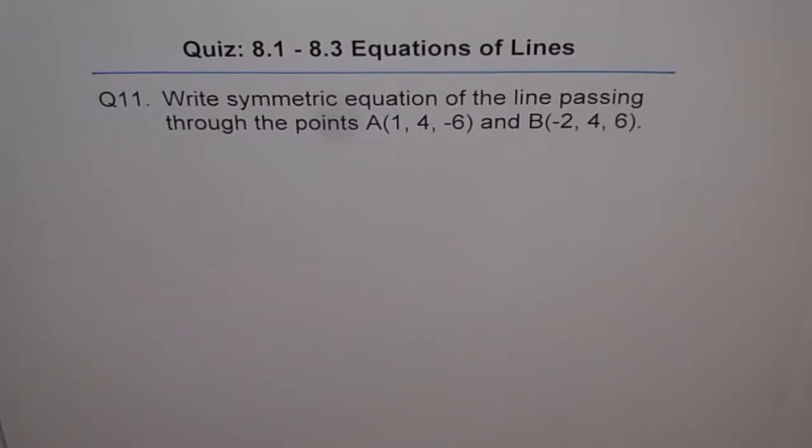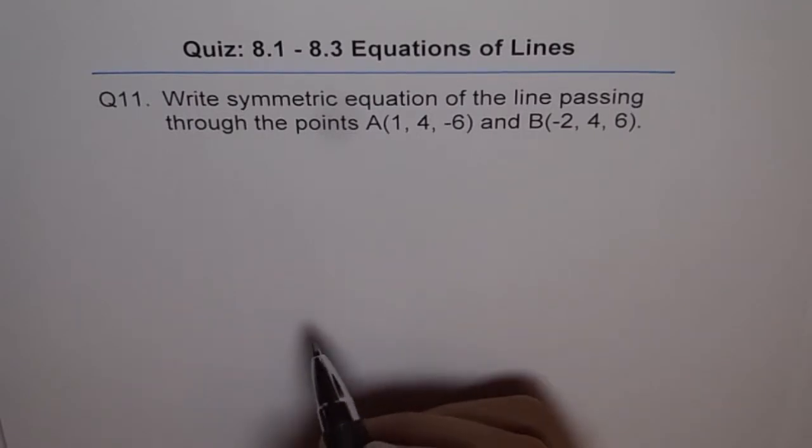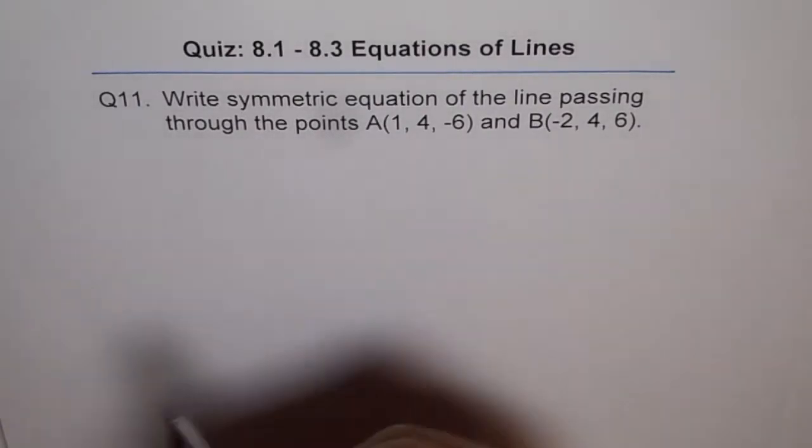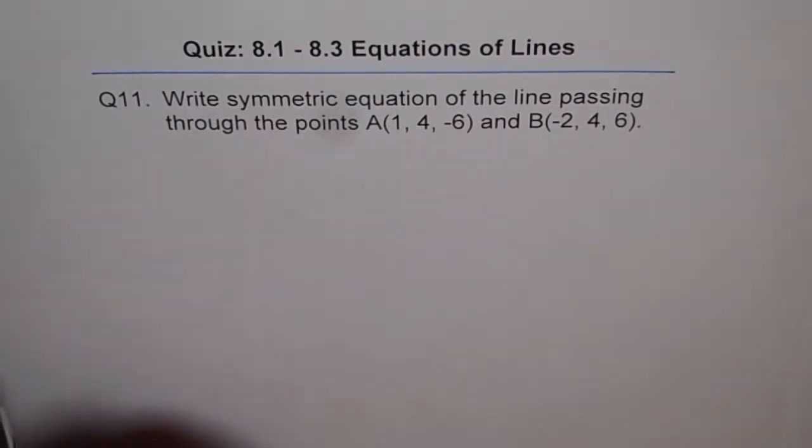Well, this is similar to the last question, question 10, but there is one difference which I'd like you to appreciate. So, as we did in question 10, let's write down the symmetric equation of our line going through points A and B. First thing is we have to find the direction vector.